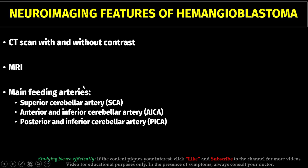How do we investigate this kind of tumor? The main radiologic exams used are CT scan and MRI. The main feeding arteries are the superior cerebellar artery, the anterior and inferior cerebellar artery, and the posterior and inferior cerebellar artery — these are the three main feeding arteries of this tumor.